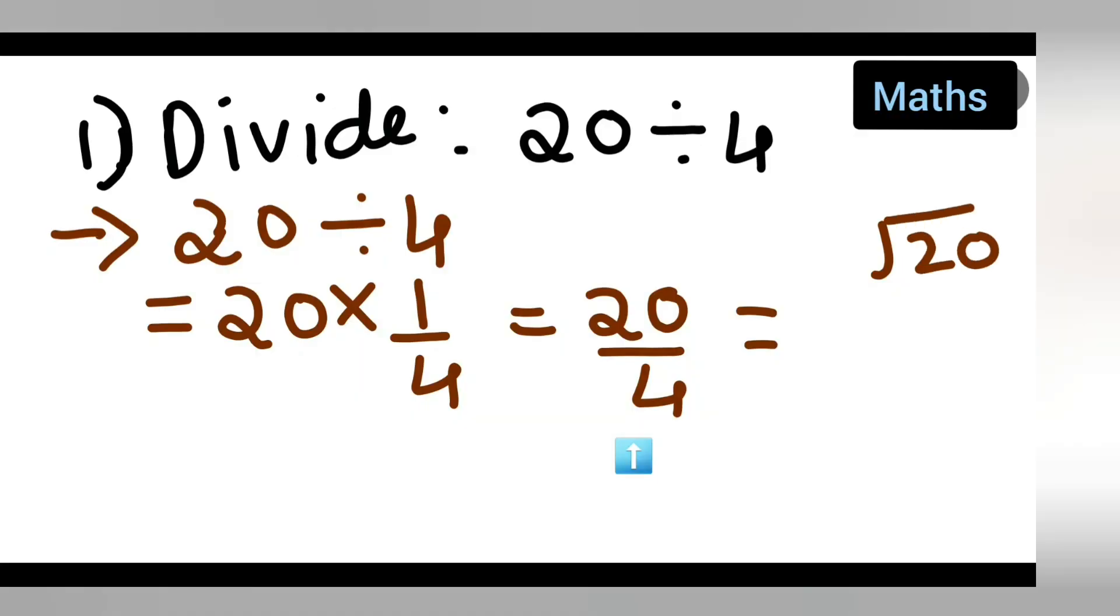So 20 and 4, 4 fives are 20, you will get, right? You can always check like this way. Now let me rub this part so I can directly cancel—4 ones are 4, 4 fives are 20. So your answer is 5. I hope you have understood how to divide 20 by 4. Thanks for watching.